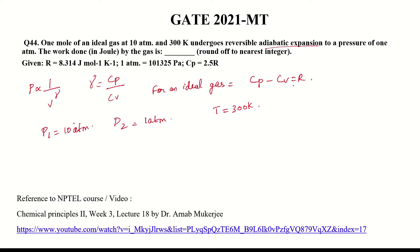We will first find Cv. Since Cp - Cv = R and Cp = 2.5R, we have 2.5R - Cv = R. Therefore, Cv = 1.5R.